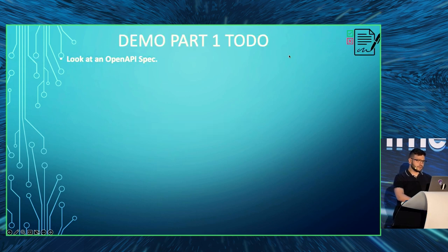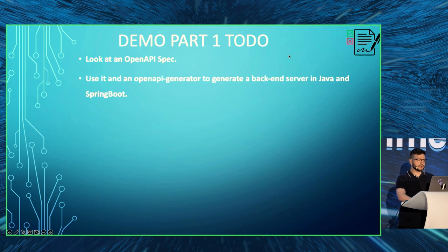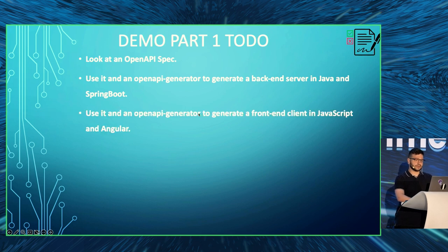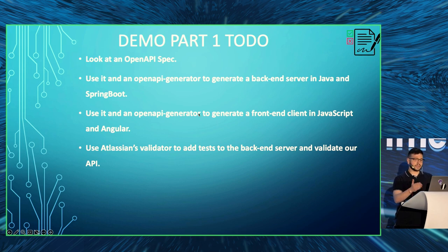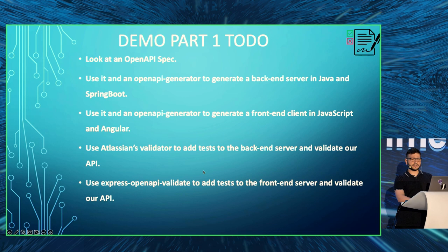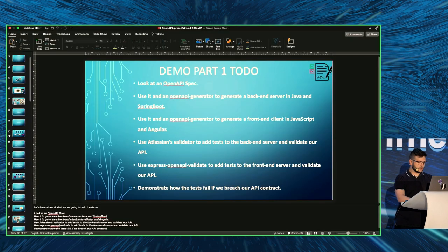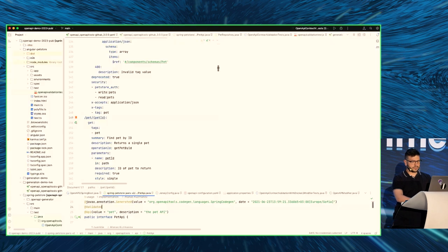Demo time! Here's what we're going to do: look at an OpenAPI spec file, use it with a generator to generate a Java Spring Boot backend, use it to generate a JavaScript and Angular front-end, use Atlassian's validator to add tests to our back-end and see if we can validate our APIs and how those tests fail if we break the contract, and use Express OpenAPI validate to add tests to the front-end as well.